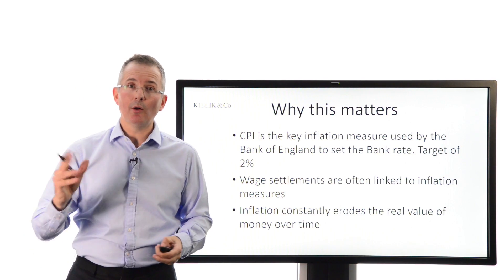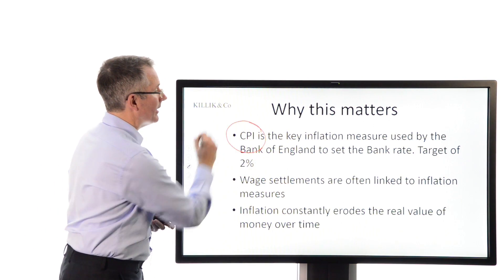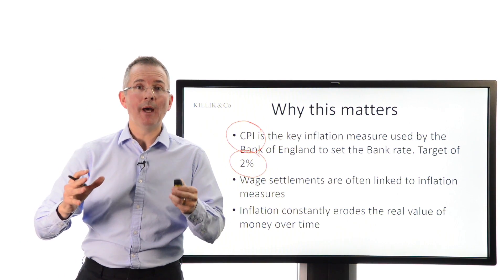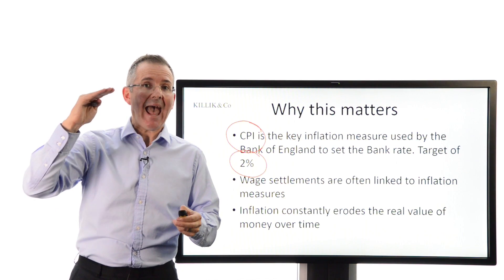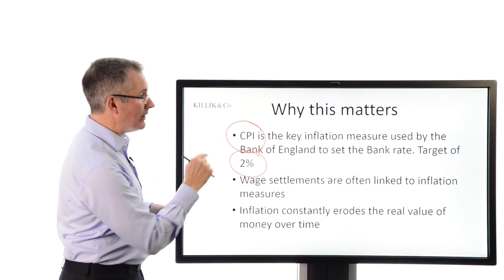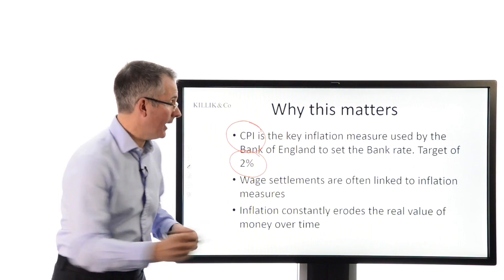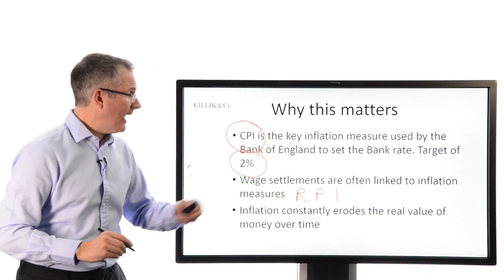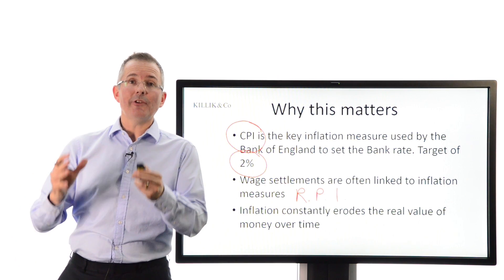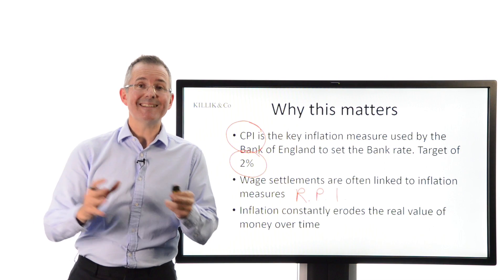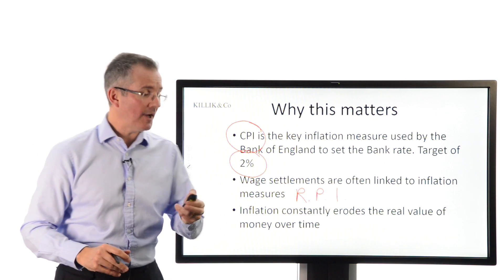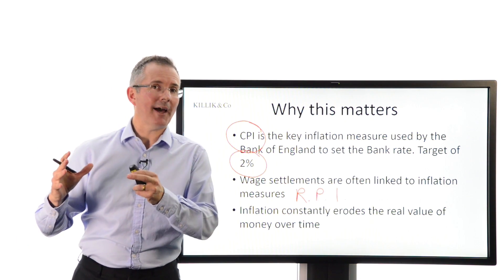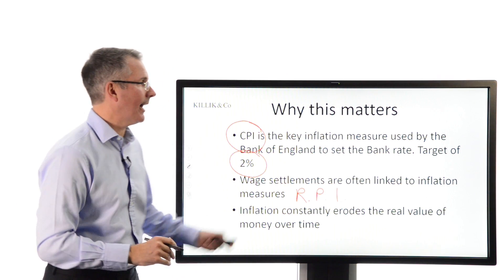Why does it matter? The CPI is the headline number used by the Bank of England. They have a target of 2%, though it's tracked quite a bit below that target recently. Their job is to maintain inflation measured by the CPI at or around 2%. Wage settlements are often linked to inflation measures — quite often still the RPI, but sometimes the CPI — and obviously that makes a difference. For investors, inflation erodes the value of your holdings continuously, bit by bit, over time.